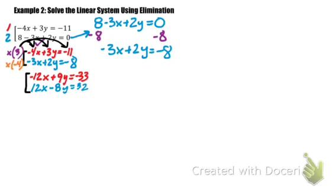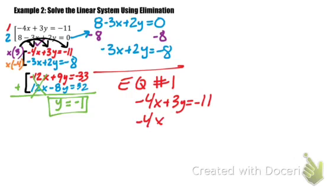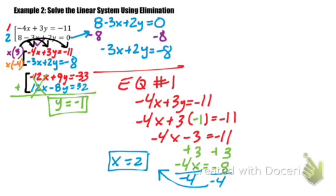Now that I have an opposite, I have a negative 12x and a positive 12x, I'm just going to add my two equations together, get rid of my x variable, and now solve. We already solved for our y variable. So y equals negative 1. Just like always, substitute that into one of the equations. I selected number 1. So x equals 2.